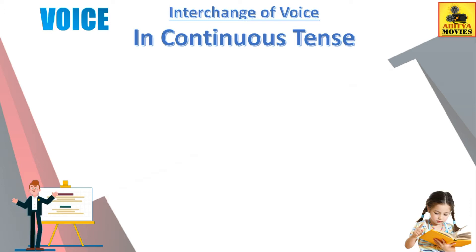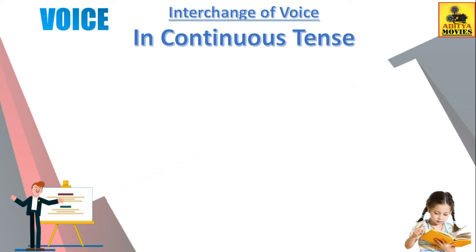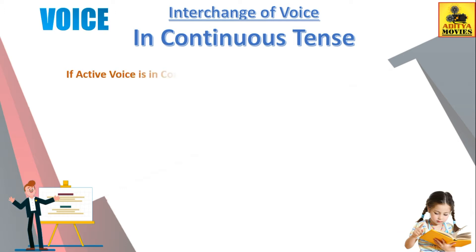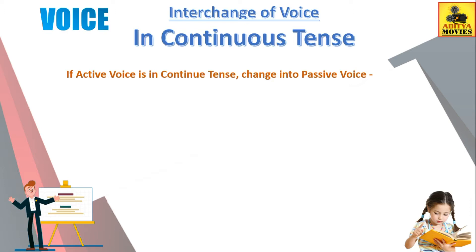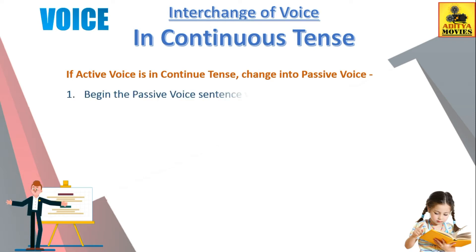So how to interchange the active voice into passive voice in continuous tense. First of all, हमको यह समझ में आना चाहिए कि किस sentence को हम continuous tense का active voice मानेंगे. If a sentence has subject plus to be plus V4 plus object, and to be plus V4 is compulsory after the subject, then it is active voice of continuous tense.